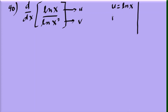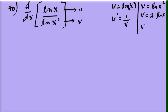If u is natural log of x, then u prime is 1 over x. For v equals natural log of x squared, use the property: that equals 2 times natural log of x, so v prime is 2 times (1 over x), which is 2 over x.